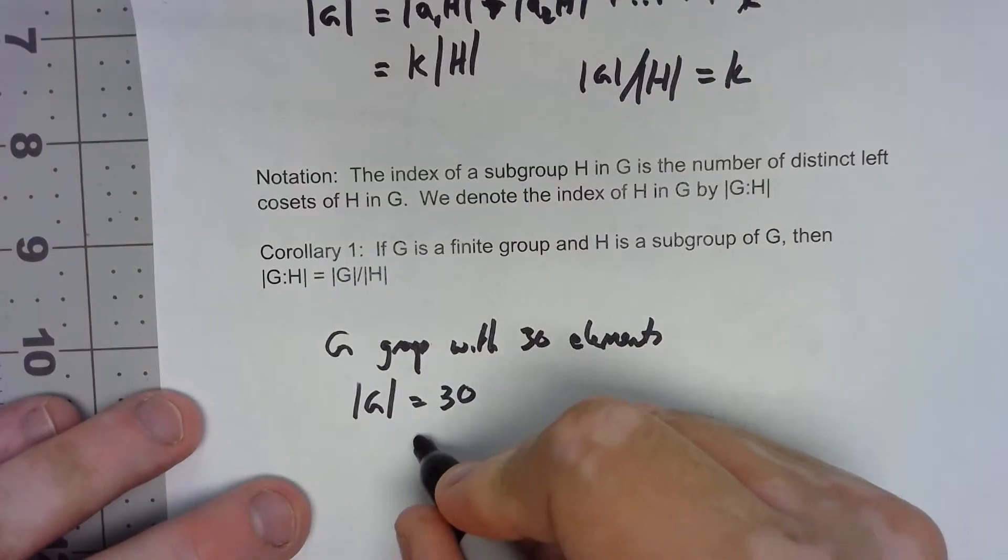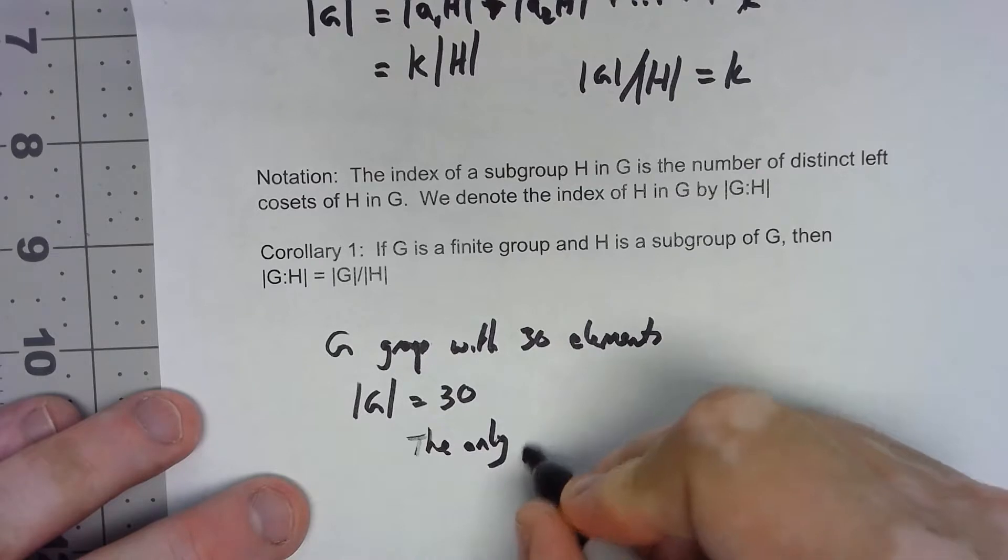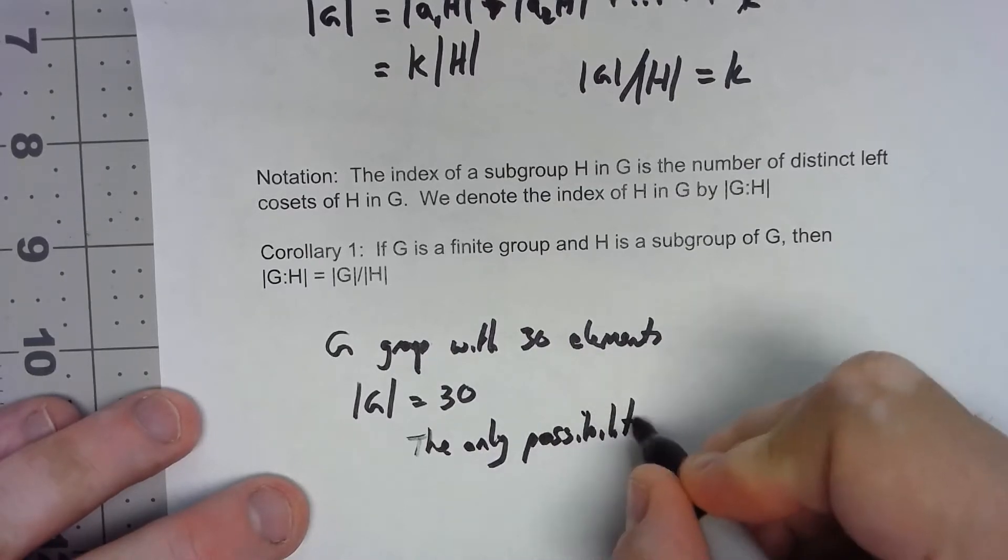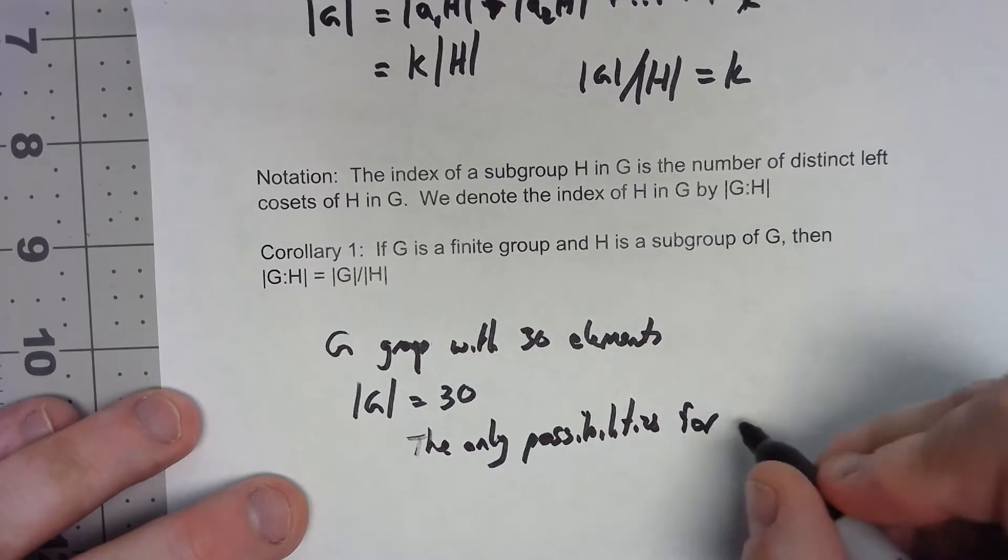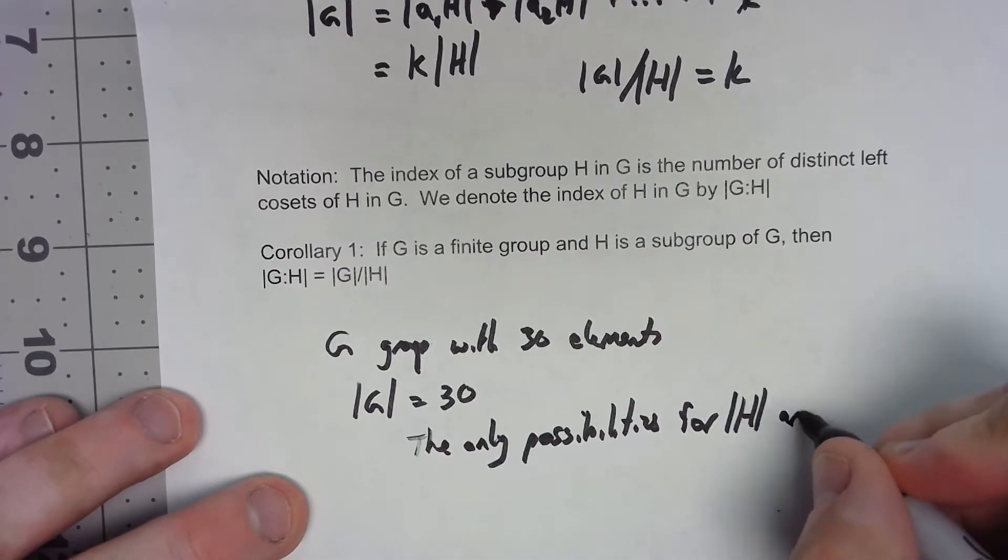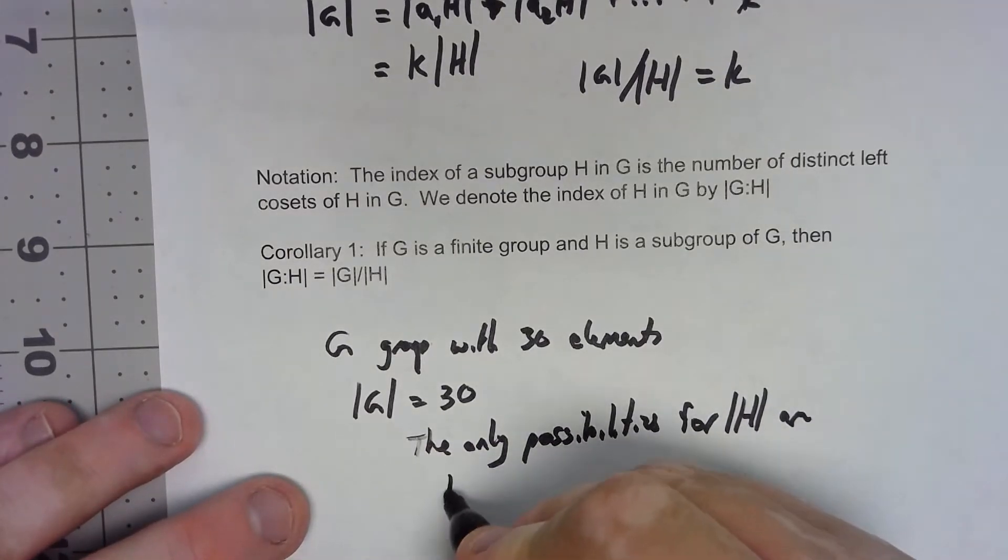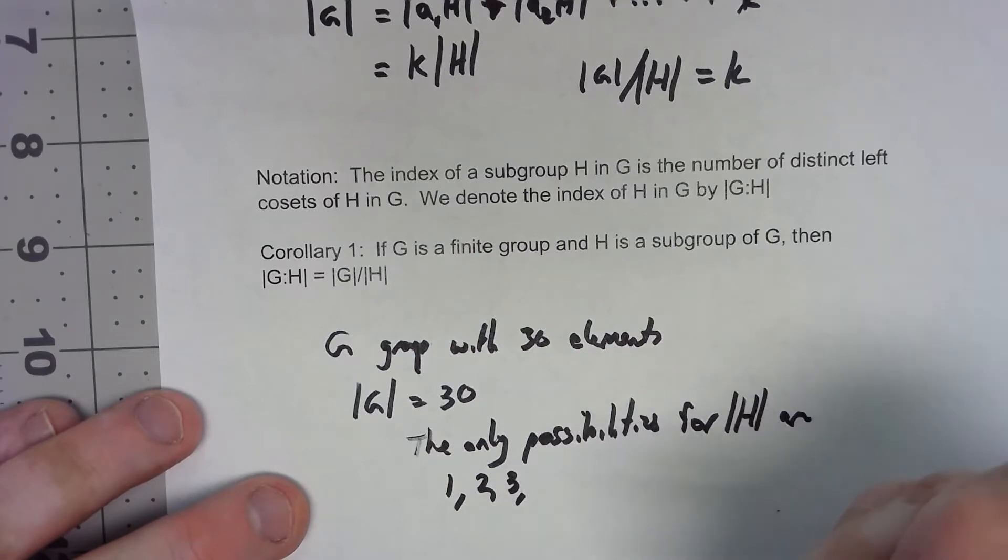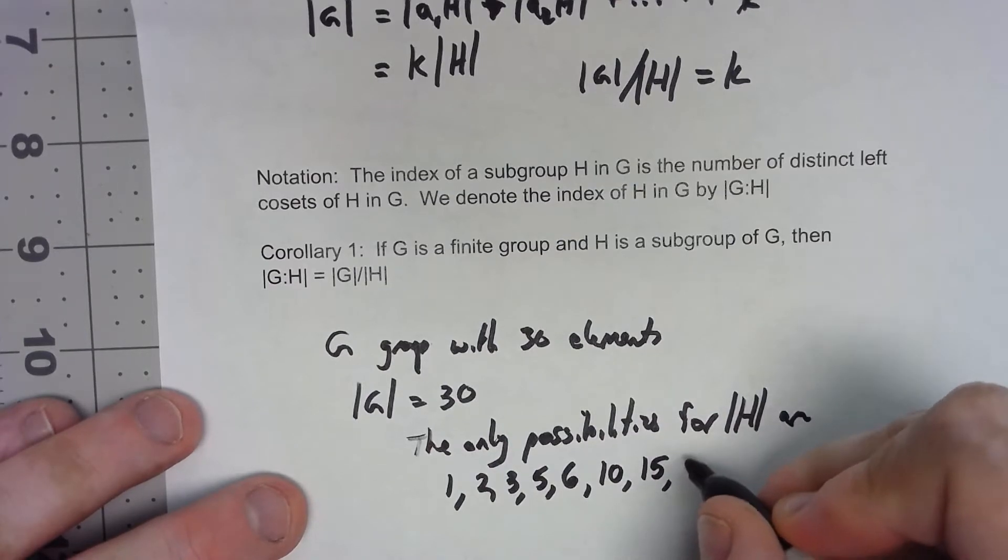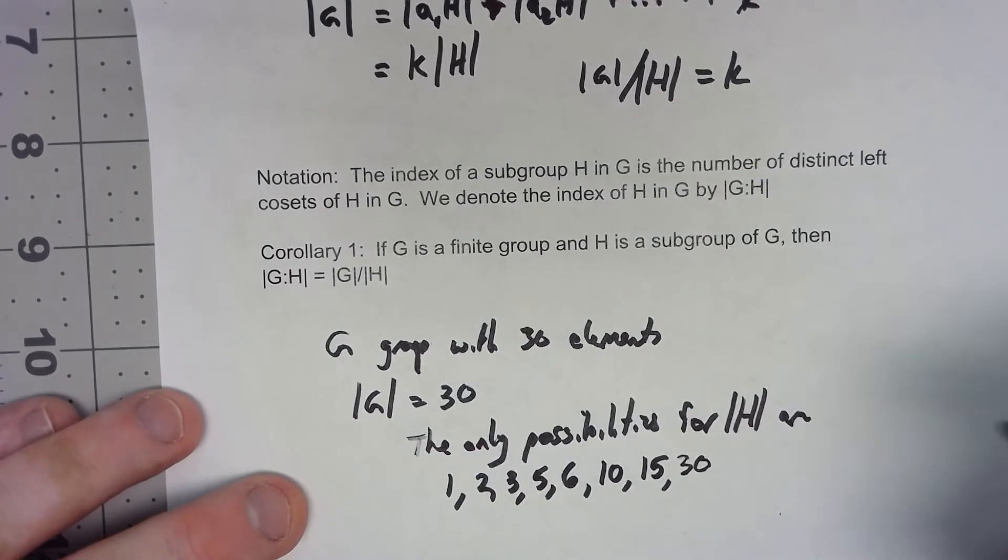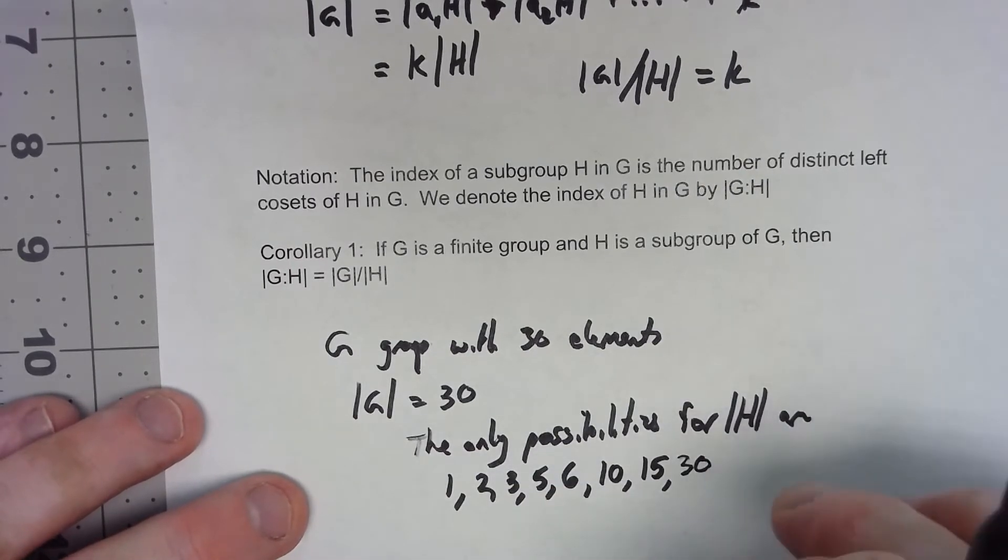Well, that means the only possibilities for the order of a subgroup H are things that divide into 30. It could be 1, it could be 2, it could be 3. It couldn't be 4 because 4 doesn't divide into 30. It could be 5, it could be 6, it could be 10, it could be 15, and it could be 30.